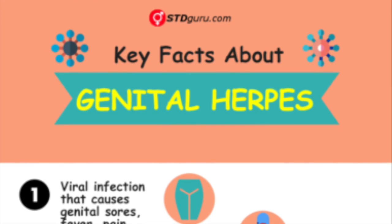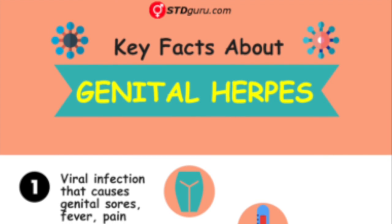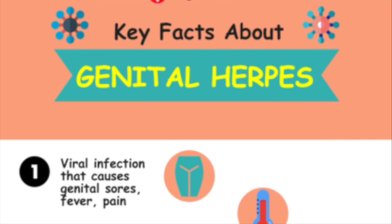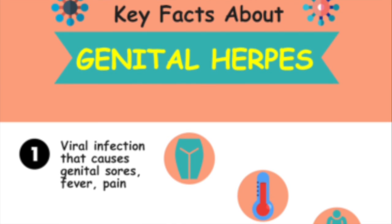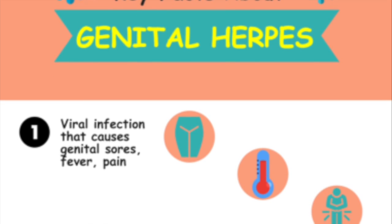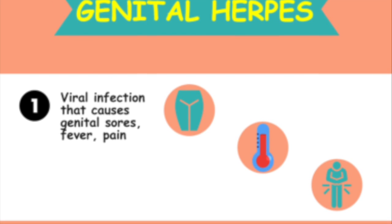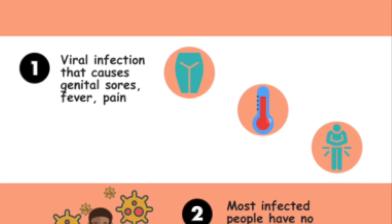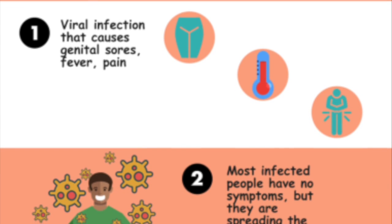There's also asymptomatic shedding, which is the release of infectious virus particles even when no symptoms of the infection are present. Generally, if you can see the outbreak, you definitely want to avoid sex — that's when it's highly contagious. However, it is possible for asymptomatic shedding to happen, meaning that even though you can't see a sore or blister, it's still possible to pass the infection on to someone else.